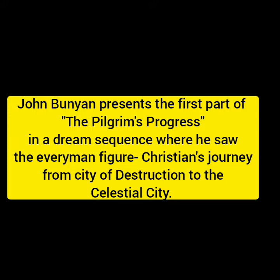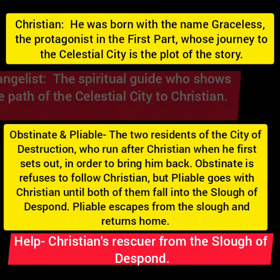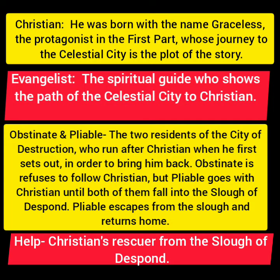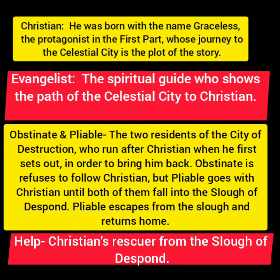John Bunyan presents Christian as an everyman figure, a representative of all human beings, and this mortal world is called the City of Destruction. To understand this novel clearly we need to know a few important characters. The Pilgrim's Progress has a vast character list, so I'm just mentioning a few important characters from Part One here, and I'll provide the full character list in a future session.